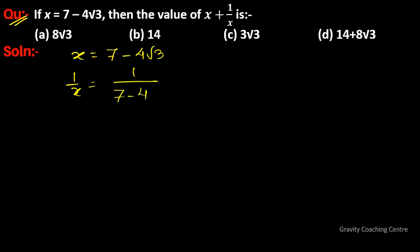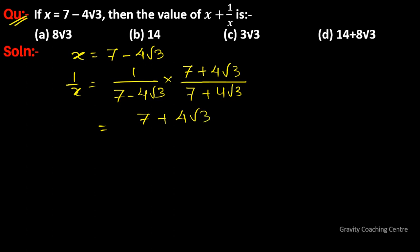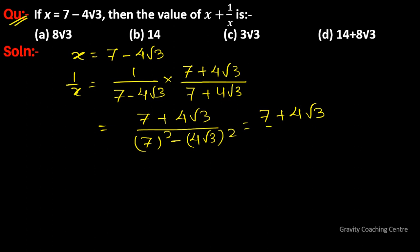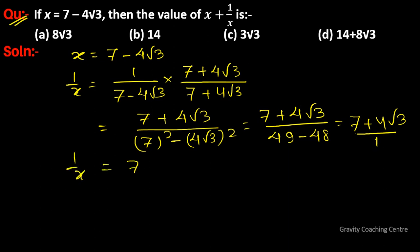We rationalize the denominator by multiplying by 7 plus 4 root 3 upon 7 plus 4 root 3, giving 7 plus 4 root 3 upon 7 squared minus 4 root 3 whole squared. This equals 7 plus 4 root 3 upon 49 minus 48, which equals 7 plus 4 root 3 upon 1. So 1 upon x equals 7 plus 4 root 3.